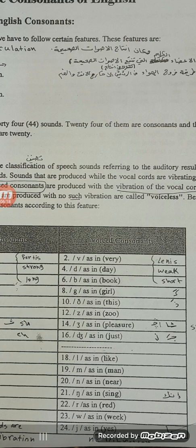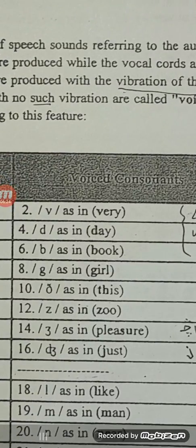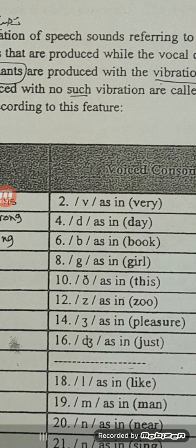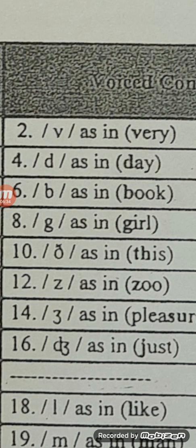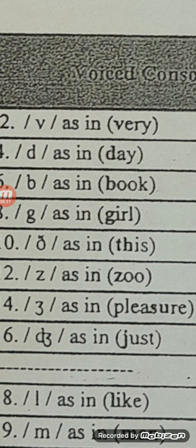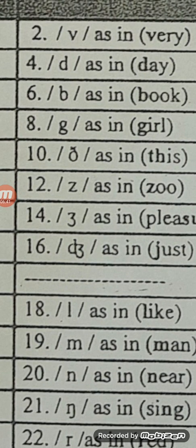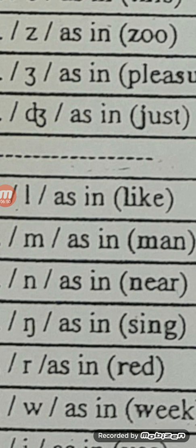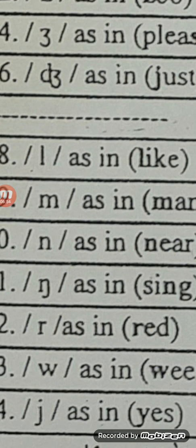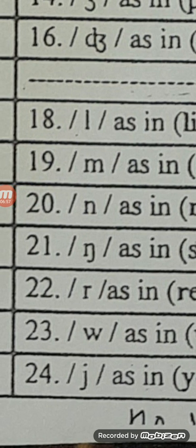If we move to voiced consonants, we have here VH, DH, BH, GH, and we have number 10 VH, and we have ZH like zoo, and we have the ZH like pleasure, we have JH like just, and LH, and number 18 and 19, MH, NH, and ING like sing, and we have the R sound like red, and WH, and the last one number 24 which is YAH, the sound is YAH not Y.